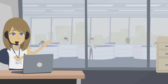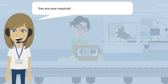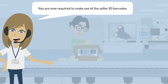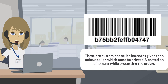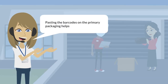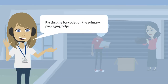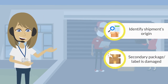Therefore, to ensure a smooth return process and to reduce shipments being orphaned or lost, you are now required to make use of the Seller ID Barcodes. These are customized Seller ID Barcodes given for a unique seller, which need to be printed and pasted on each shipment while processing orders. Pasting the barcodes on the primary packaging will help us identify the shipment's origin details in case the secondary package or the shipping label is damaged.